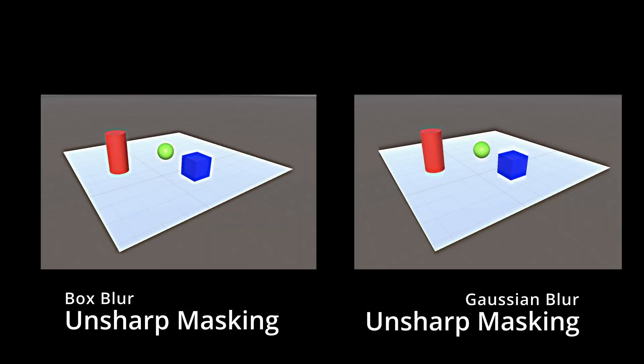We can now compare the unsharp masking done with a box blur filter with the one obtained with a fast Gaussian filter. The differences are not noticeable due to the fact that this effect is always applied with barely noticeable blurring parameters.